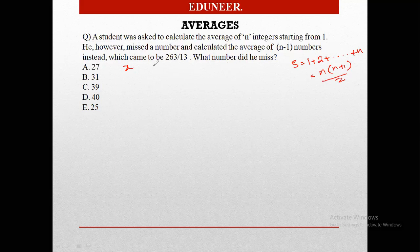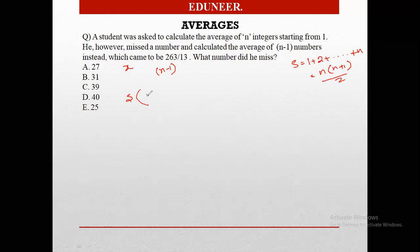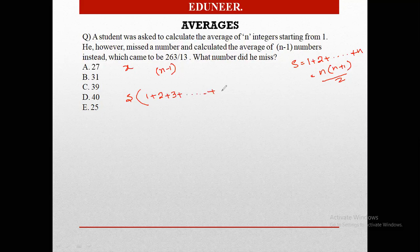However, in this question, the guy calculated the average of n minus 1 numbers, right? So the sum of n minus 1 numbers would be what? It would be n minus x, the entire 1 to n minus x, the missed number. So this would be n into n plus 1 by 2 minus x. I hope this is simple and clear.